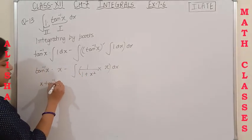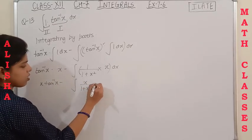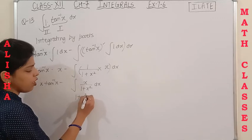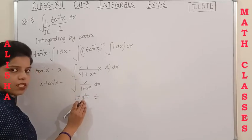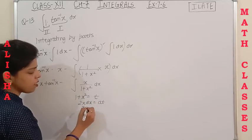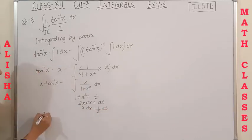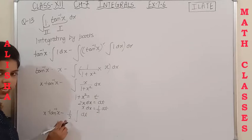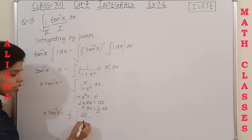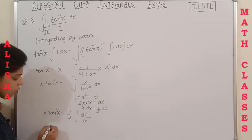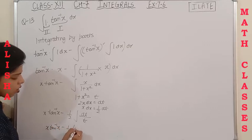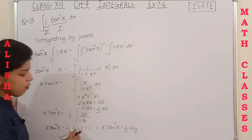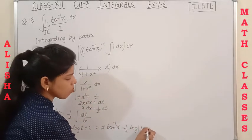This becomes x·tan⁻¹x − ∫x/(1+x²) dx. To evaluate the remaining integral, put 1+x² = t, so 2x dx = dt, meaning x dx = dt/2. Substituting: (1/2)∫(1/t)dt = (1/2)log t. Replacing t = 1+x²: the final answer is x·tan⁻¹x − (1/2)log(1+x²) + C.